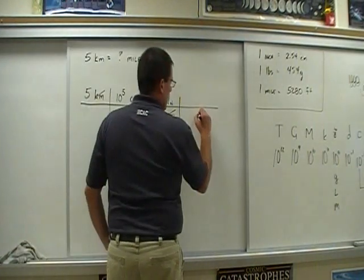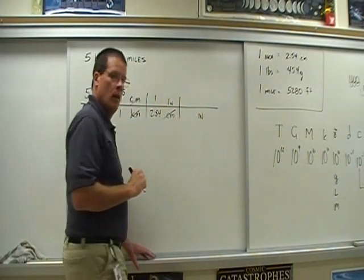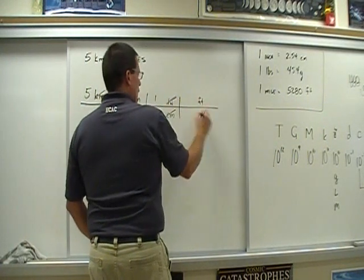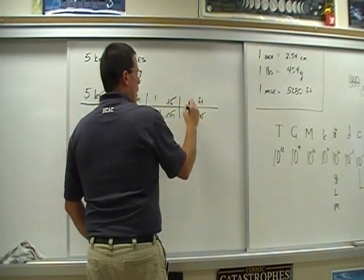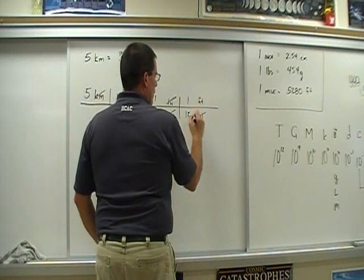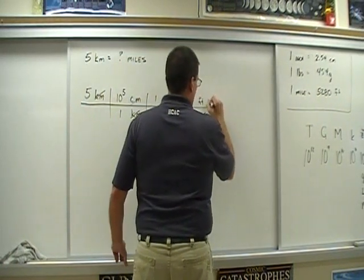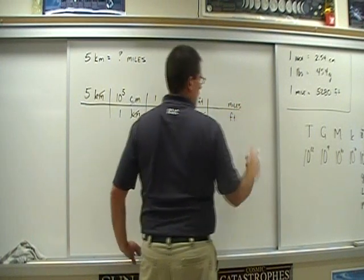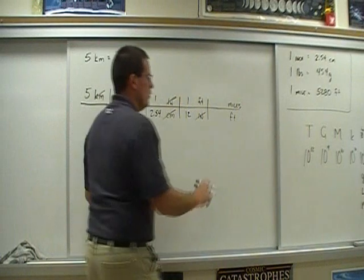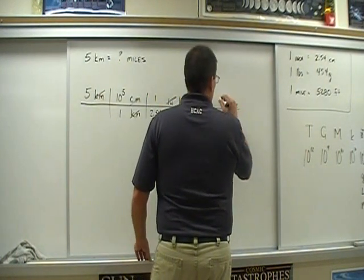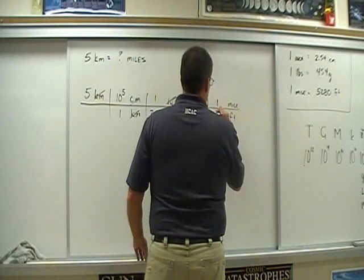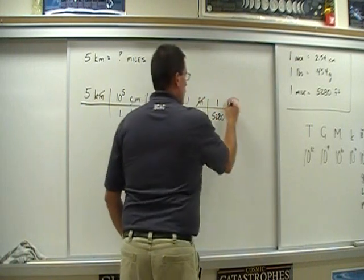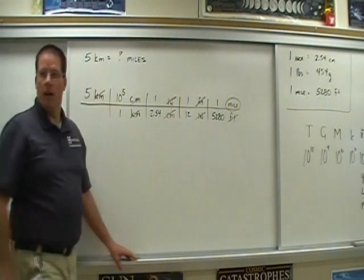So what do I need to convert the inches to? Feet. I'll use this conversion. The inches are gone — in one foot there are 12 inches. Then slide your unit feet and put miles on top. In one mile there are 5,280 feet. We have our unit: miles.